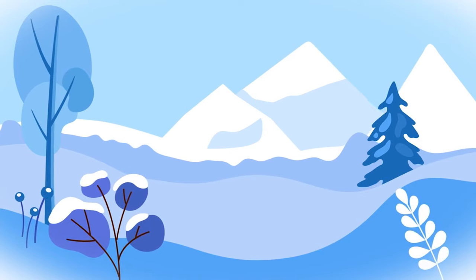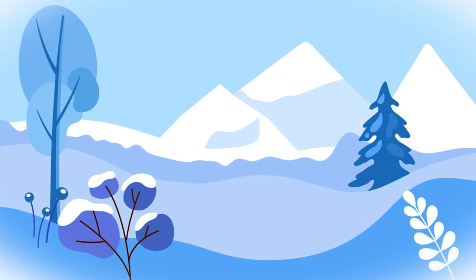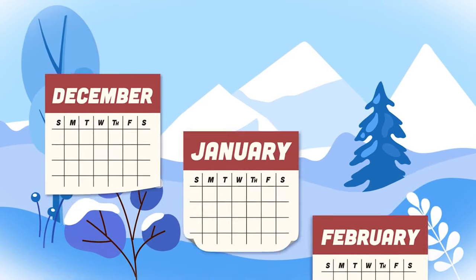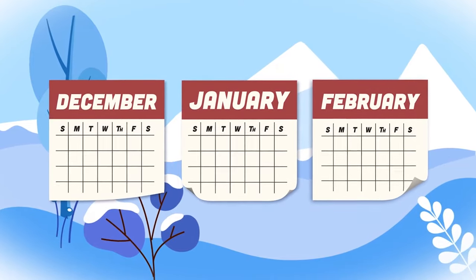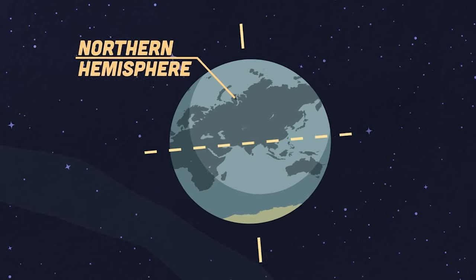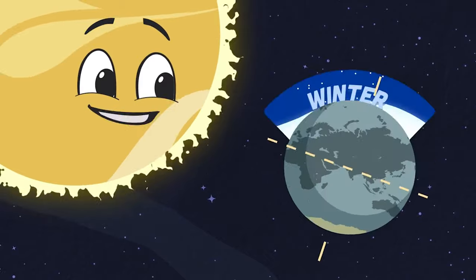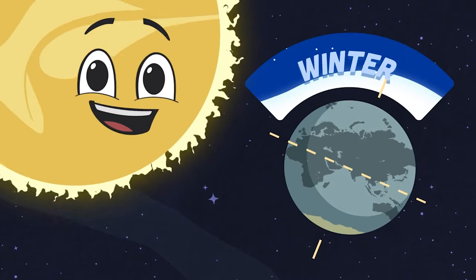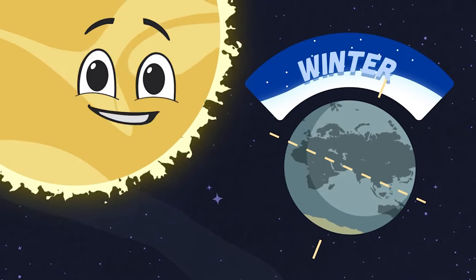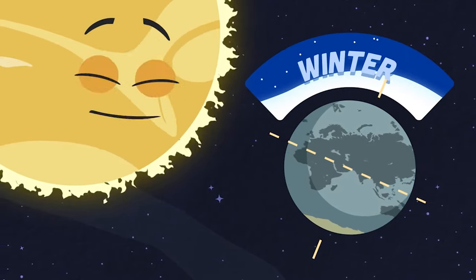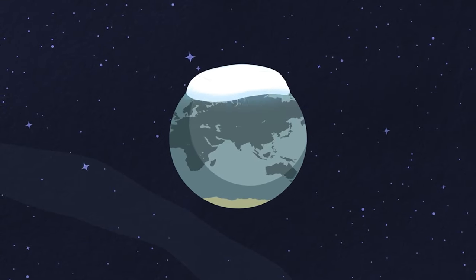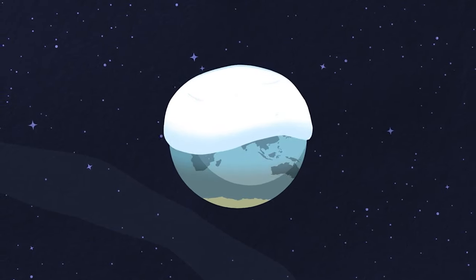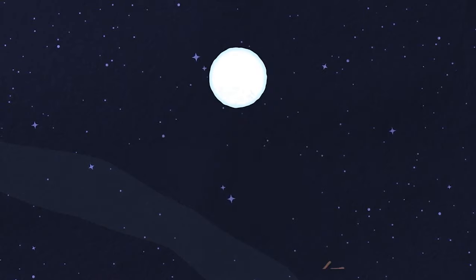Winter is the coldest season of the year. It lasts three calendar months. When the northern hemisphere is tilted away from the sun, winter occurs. The north of the earth gets colder and snow starts to fall — you can build a snowman and throw a snowball.